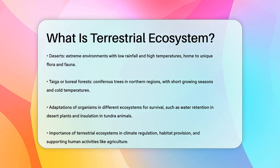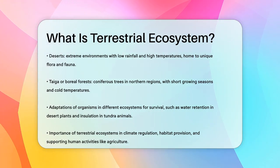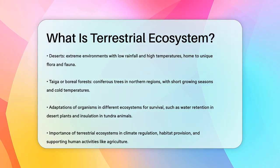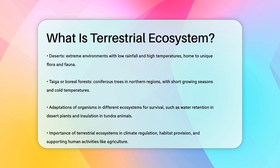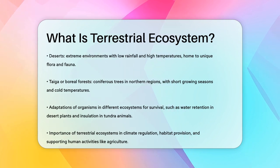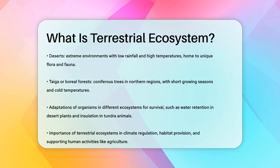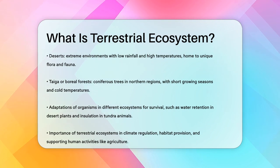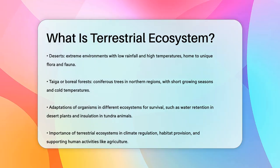In summary, terrestrial ecosystems are the diverse and vibrant environments that cover much of our planet's land surface. Each type has its own unique characteristics and supports a wide range of life, making them essential for the health of our earth.